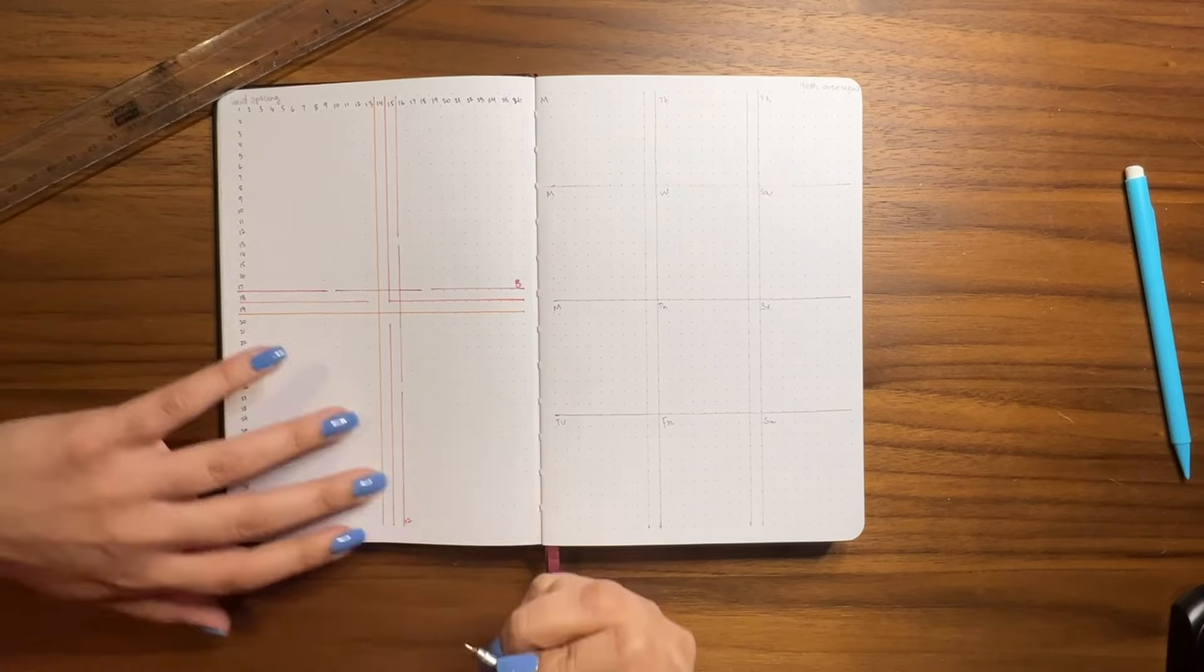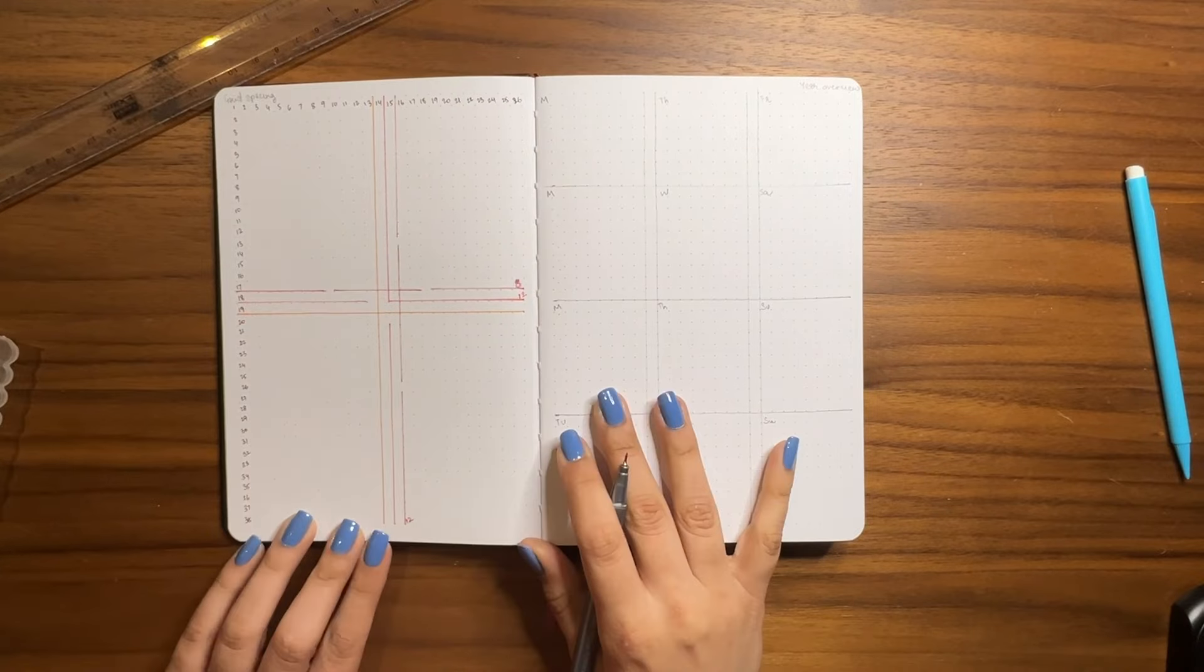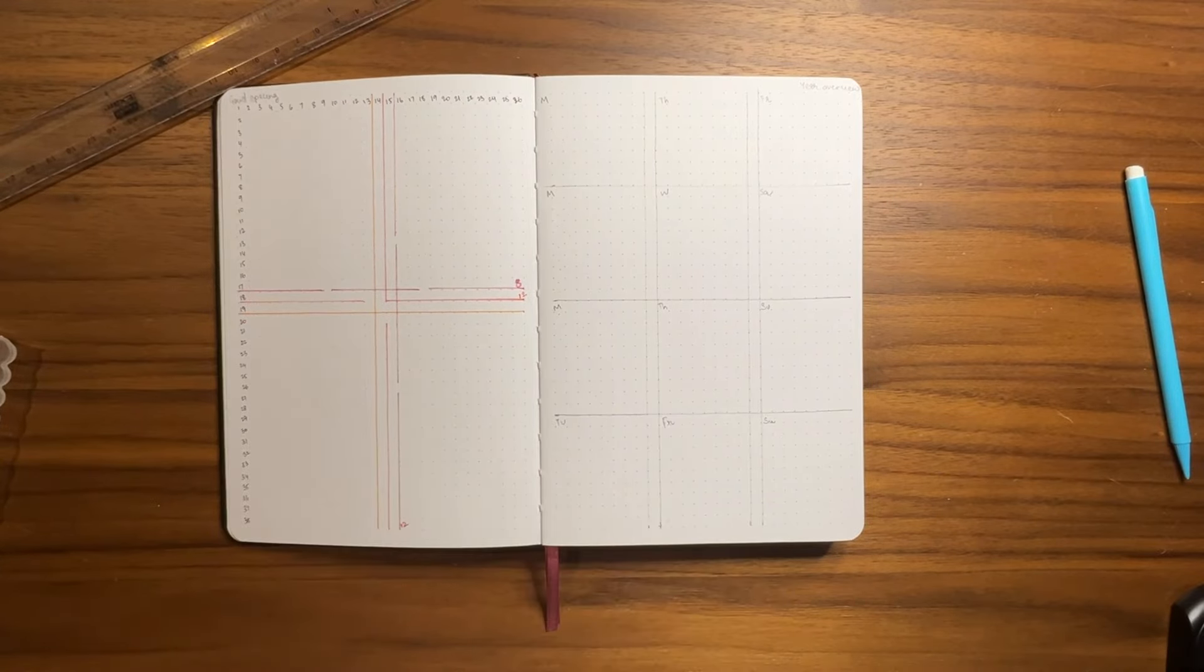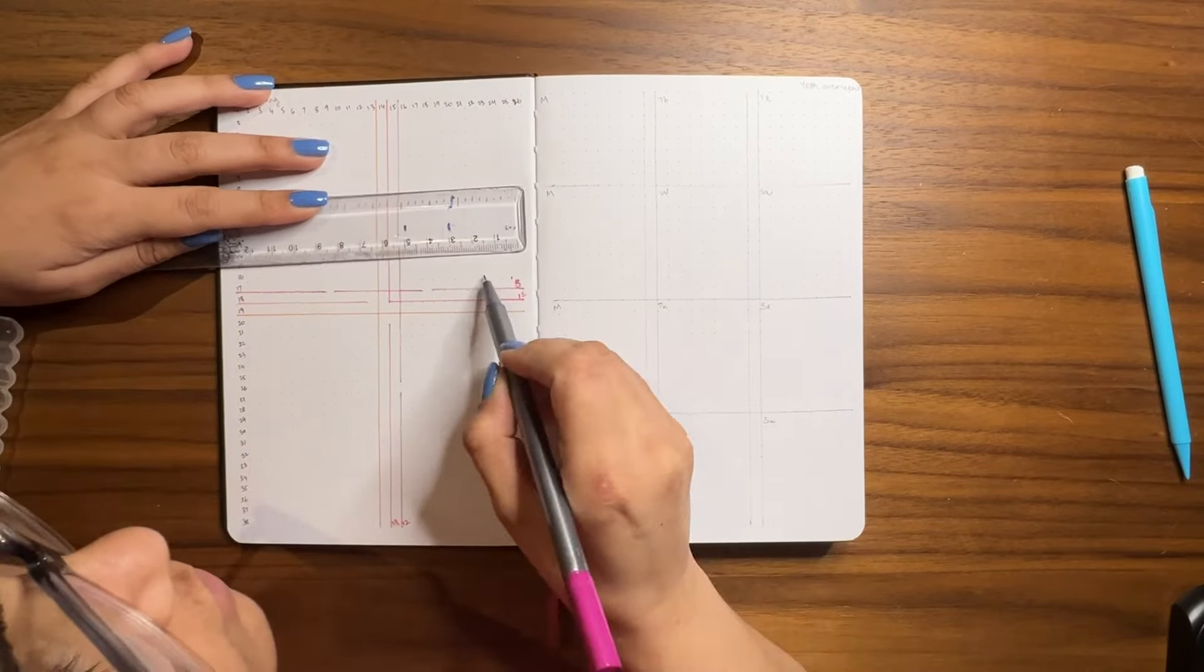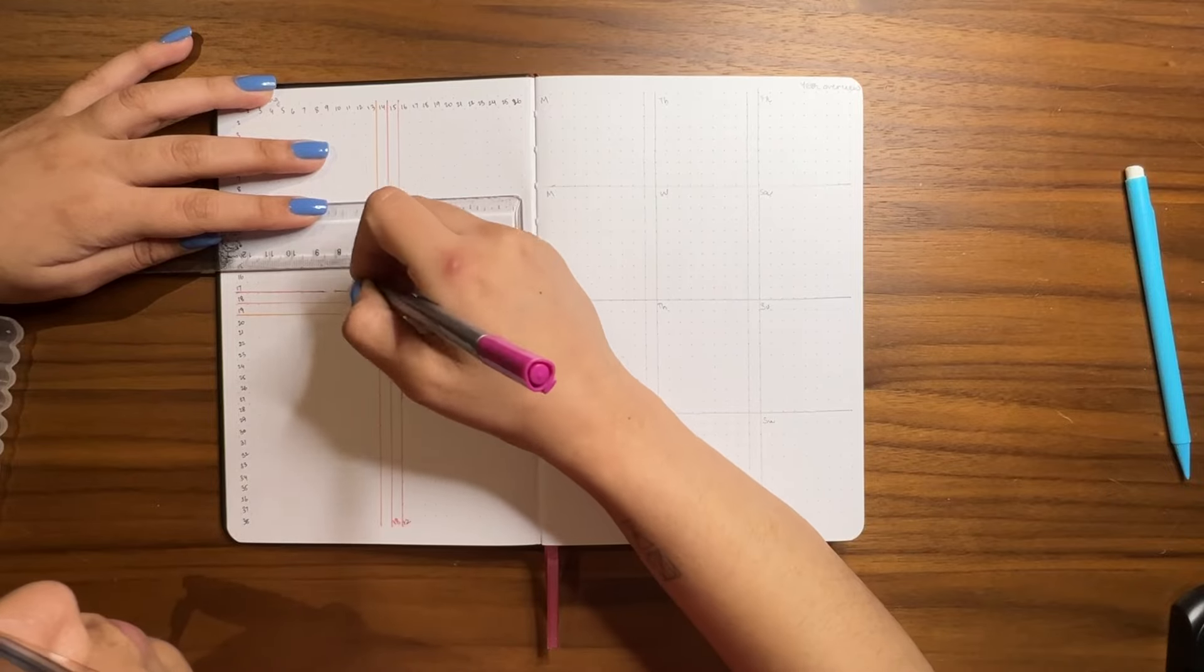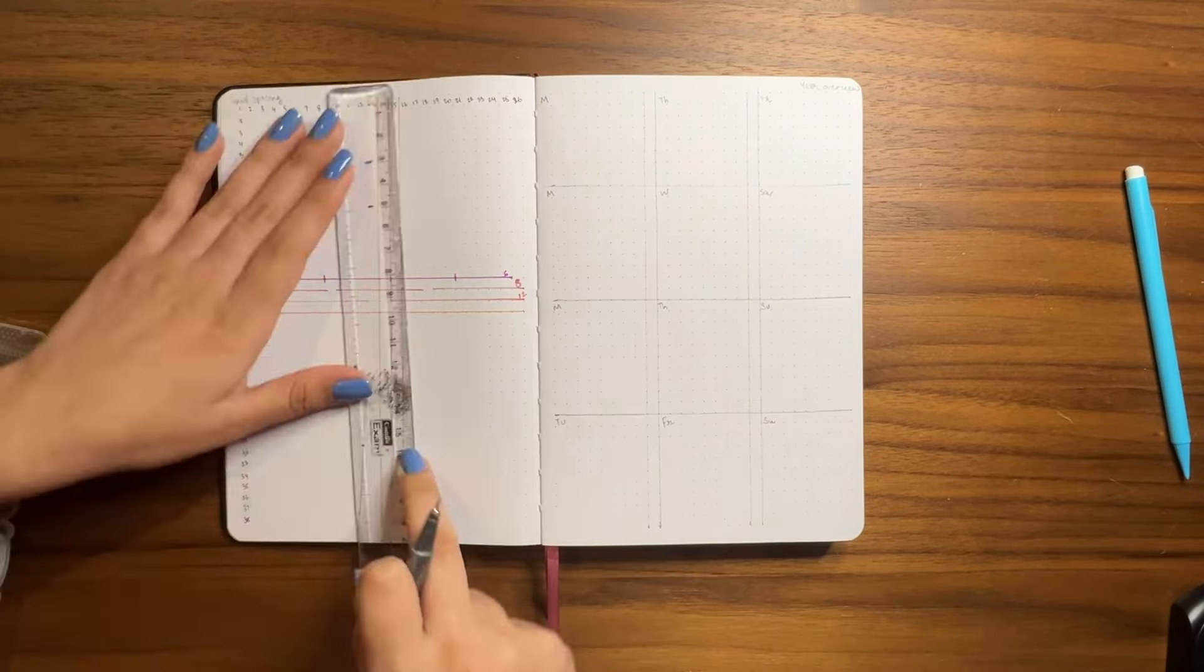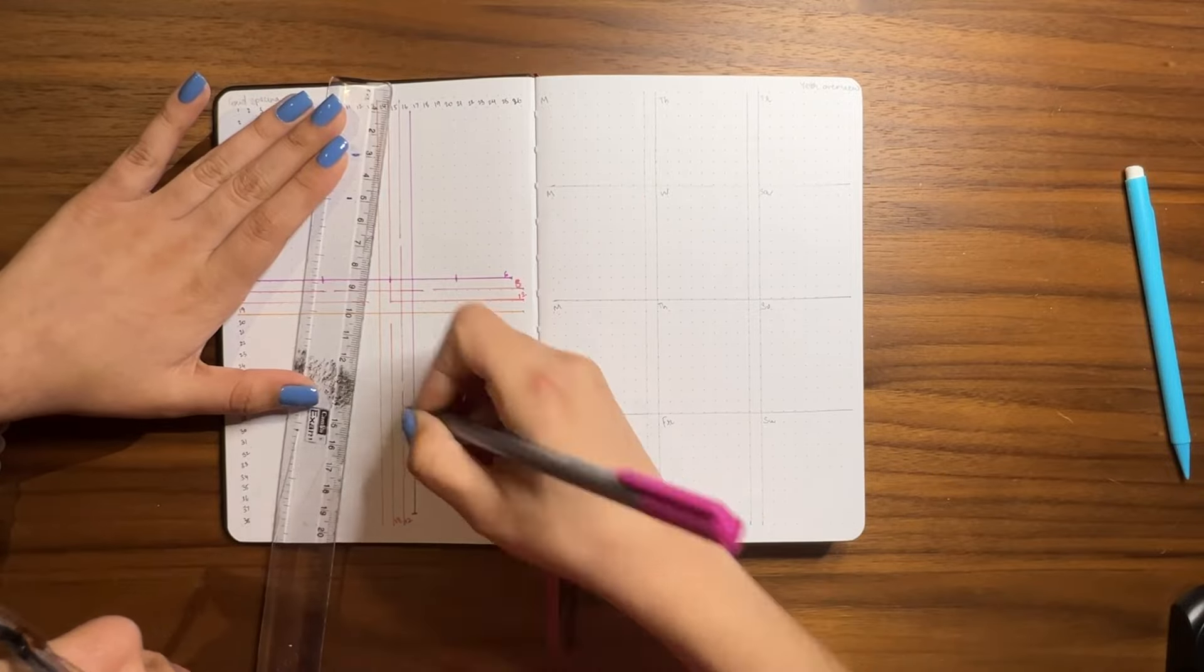The page next to it is going to be the Year at a Glance. I'm just using my yearly stamps, which I go back and forth between the Year at a Glance and the Future Log. Now that I have that covered, how's everyone doing?